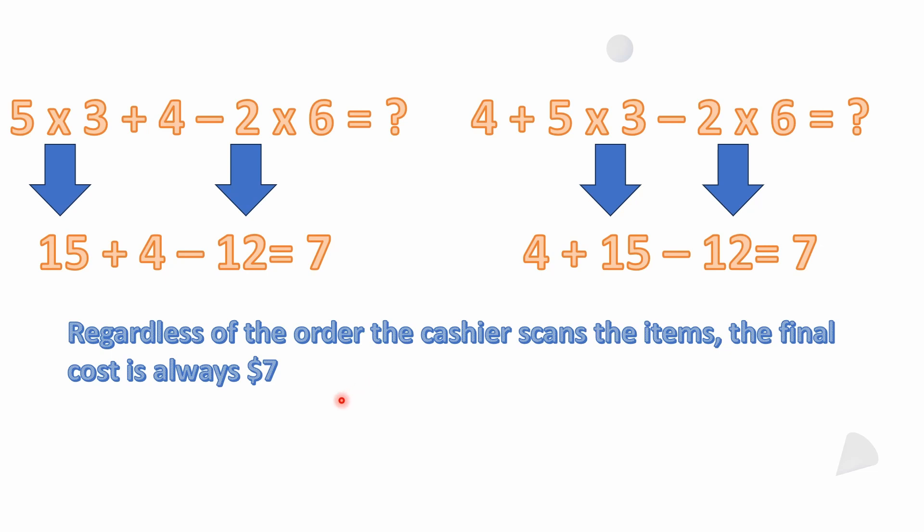For people who blindly solve left to right, these two equations give different answers. So when I hear people say 'we were taught left to right back in my day,' that's incorrect — because with these two equations you should get the same number, and left-to-right gives you different results. The order doesn't matter for how you write the terms out.